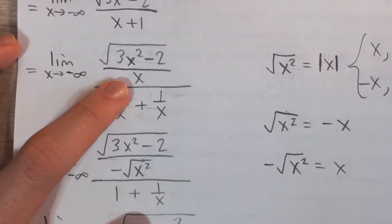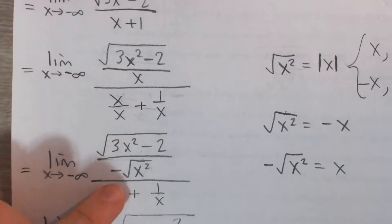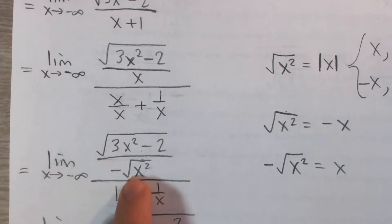And what we can actually write x as the square root of x squared, right? If you simplify this, you're going to get absolute value of x, which is kind of like x.